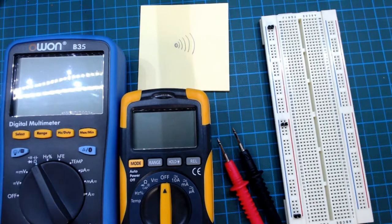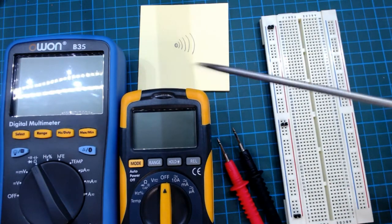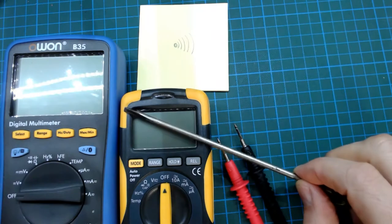In this video we're going to have a look at doing continuity tests with our multimeter. A continuity test is a quick and simple test that examines if two points have electrical connection.